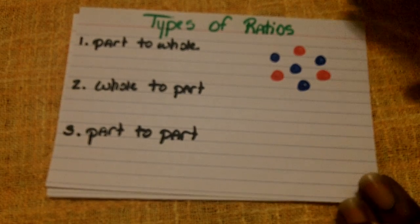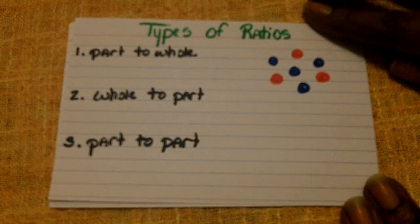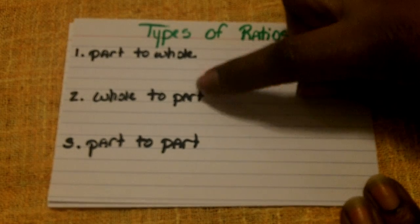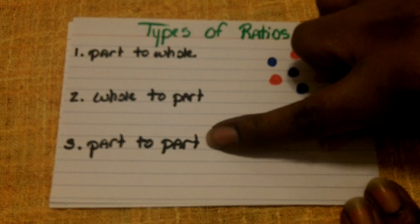First, the different types of ratios. There's actually three types of ratios: part to whole, whole to part, and finally part to part.